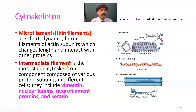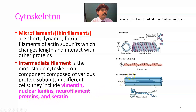The intermediate filament is the most stable cytoskeleton component, composed of various protein subunits in different cells. They differ depending on their component subunits. The subunits include vimentin, nuclear laminin, neurofilaments, and keratin. The intermediate filament is the most stable cytoskeleton component.